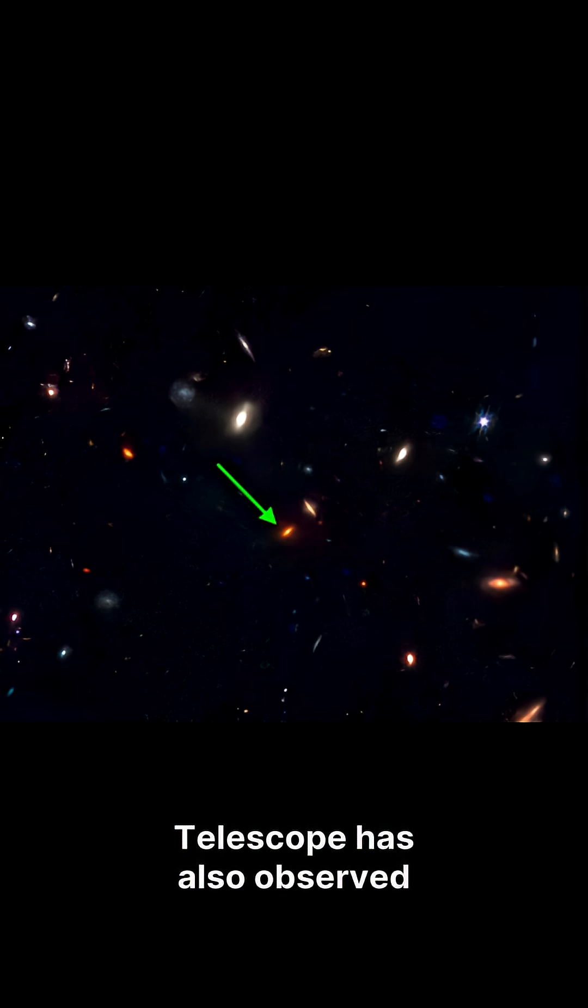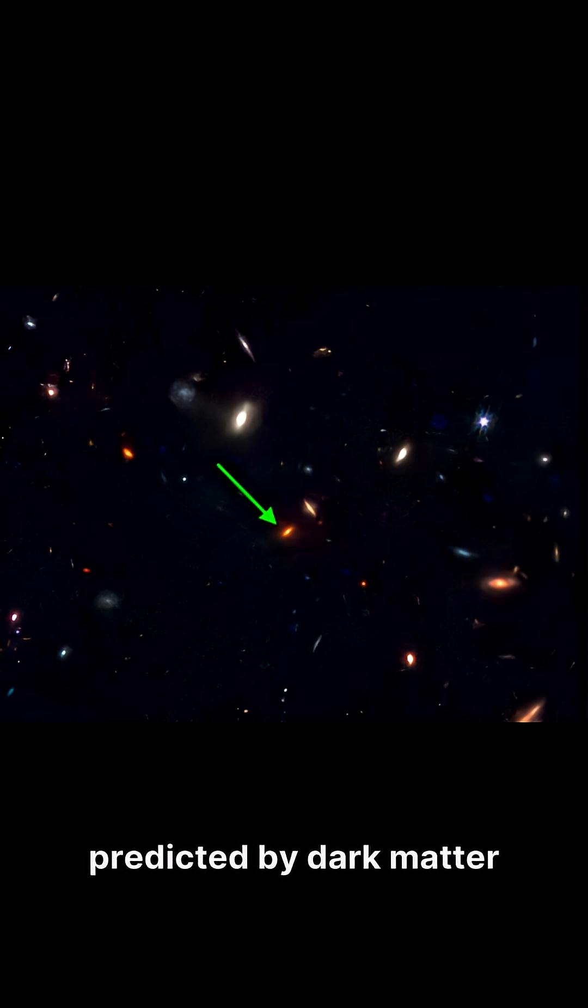The James Webb Space Telescope has also observed ancient galaxies larger than predicted by dark matter models. The Euclid satellite will soon provide even better data, mapping dark matter via gravitational lensing.